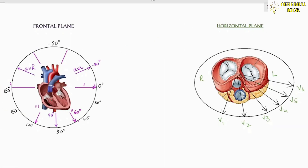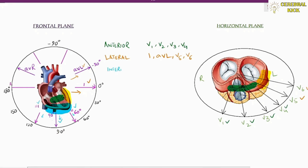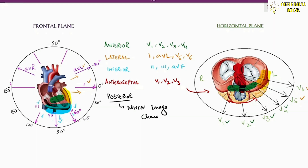Now that we have covered the frontal plane and horizontal plane of the heart, let's see how ECG leads view the heart from different angles. The anterior portion is covered through chest leads V1, V2, V3, and V4. The lateral wall is covered on the frontal plane through Leads 1 and AVL, and on the chest leads through V5 and V6. The inferior wall is covered by the down-going leads: 2, 3, and AVF. The anteroseptal area is covered through chest leads V1, V2, and V3. Since there are no leads on the posterior side, the posterior wall is seen through mirror image changes, which will be explained when studying ST segment changes in MI.